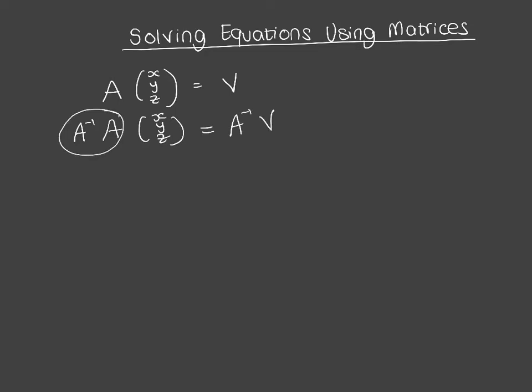Remember, these two will cancel out or they'll become the identity matrix, which doesn't change anything. So what we have is that our answer for (x, y, z) that we're trying to find is simply the inverse matrix of A times the V matrix. That's what we're going to use when we solve these equations.